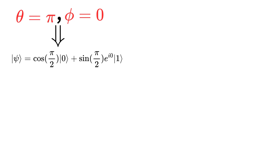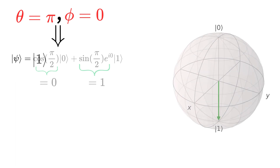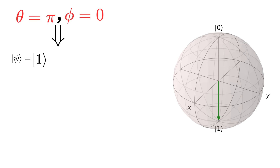If we put theta equal to pi and phi equal to 0, we get cosine of pi over 2 times ket 0 plus sine of pi over 2 times e to the i*0 times ket 1. Since cosine of pi over 2 equals 0, sine of pi over 2 equals 1, and e to the 0 equals 1, we have the south pole of the Bloch sphere, which is the ket 1 state.